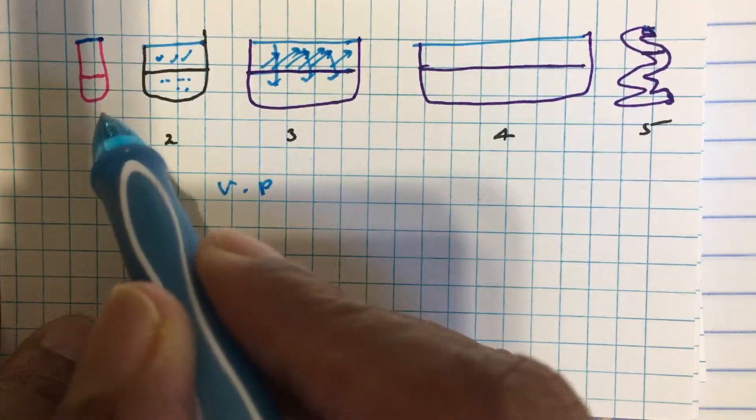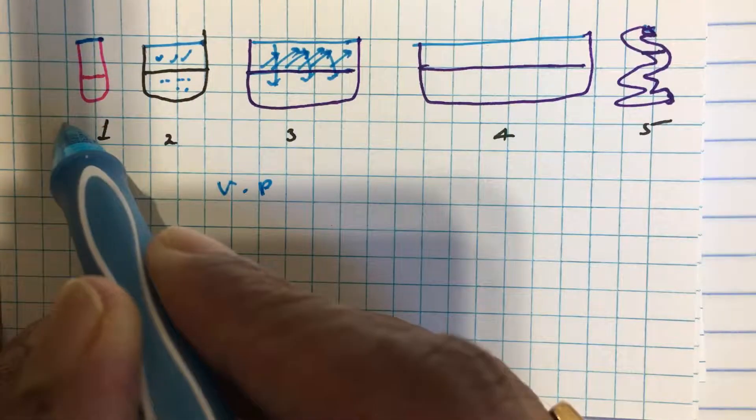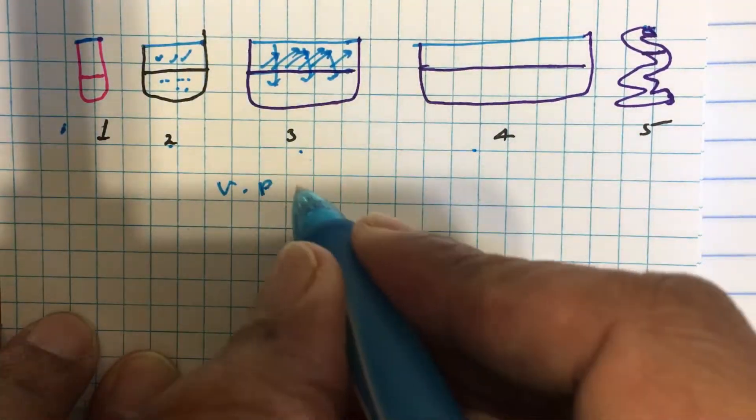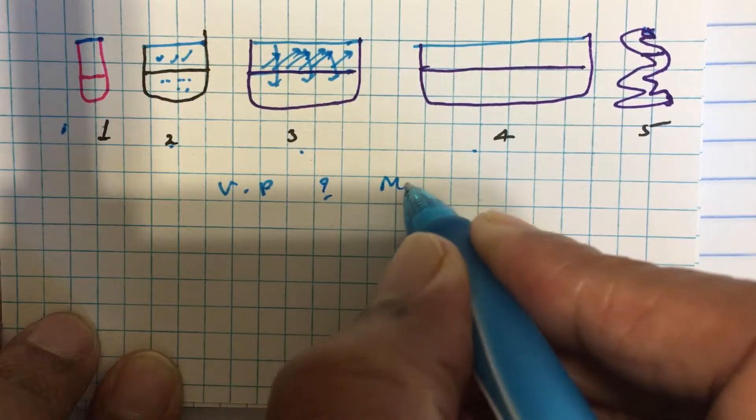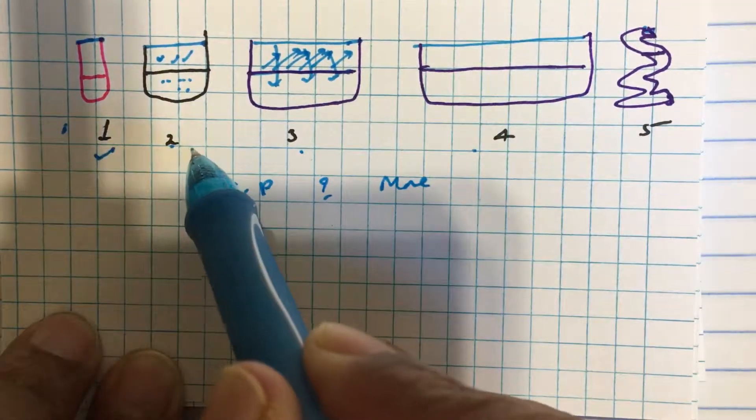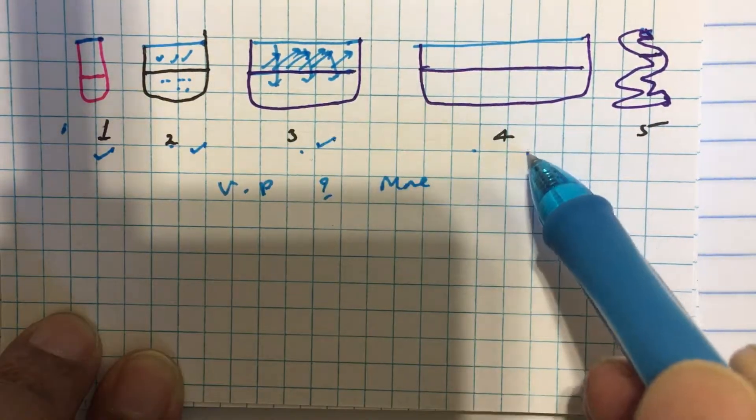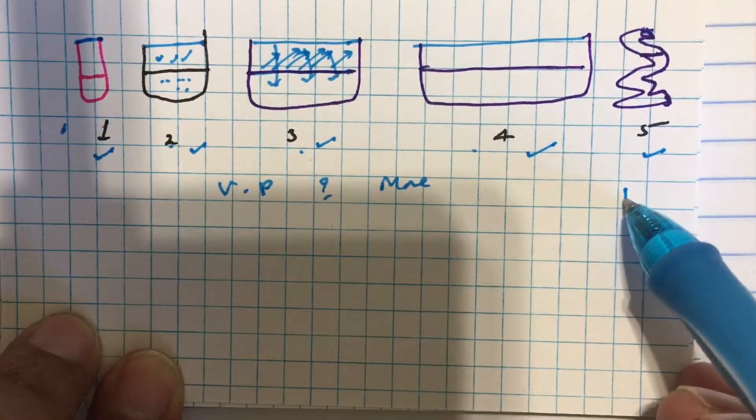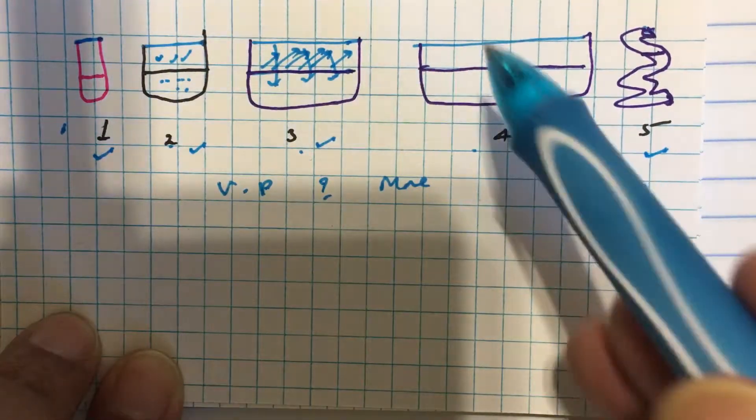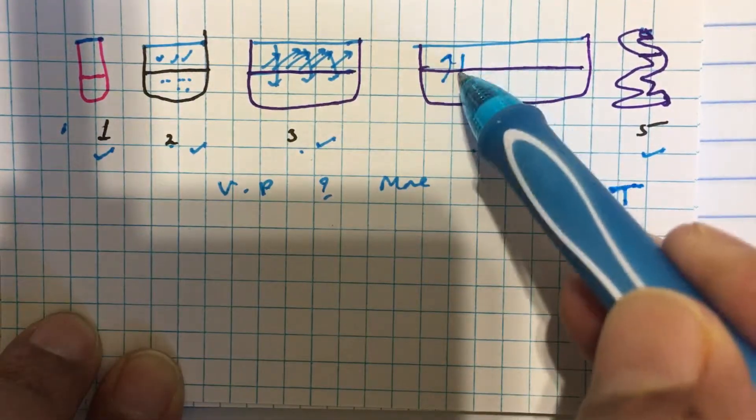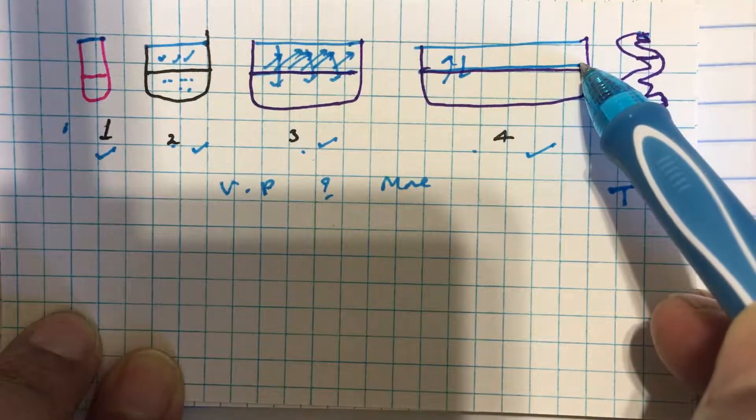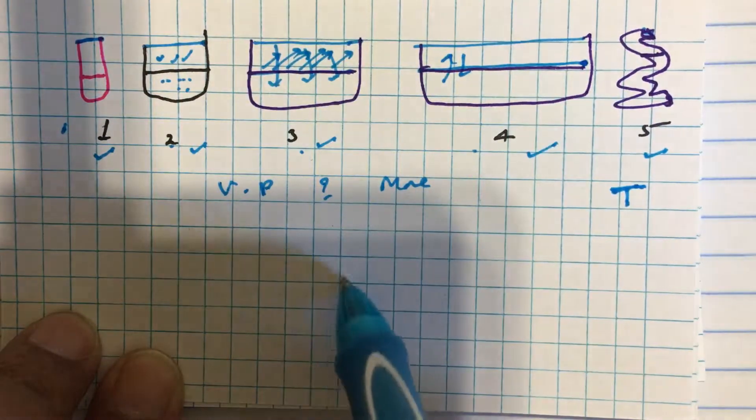Now suppose I take the same very liquid in different type of containers, say suppose I take water in a container 1, 2, 3, 4, 5. In which case vapor pressure is more? Vapor pressure is exactly same in all the containers if the temperature is constant throughout. It means this equilibrium vapor pressure is not dependent on the surface area. This is a very important point.